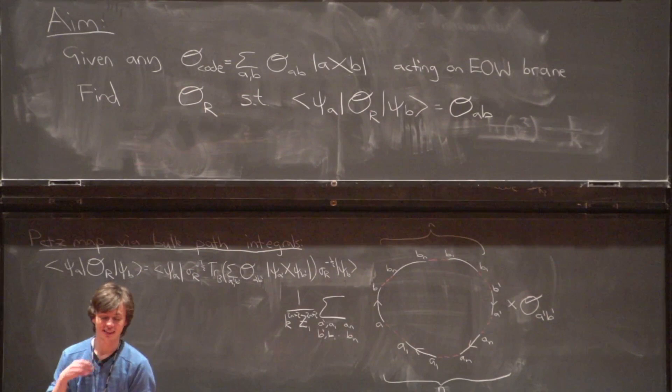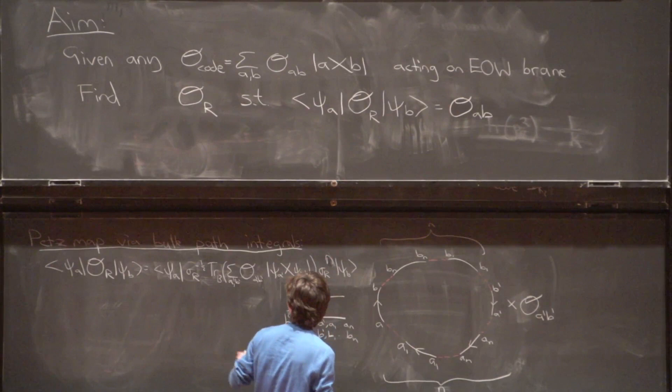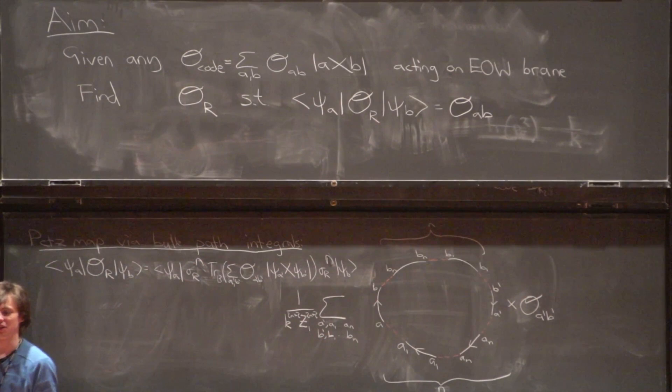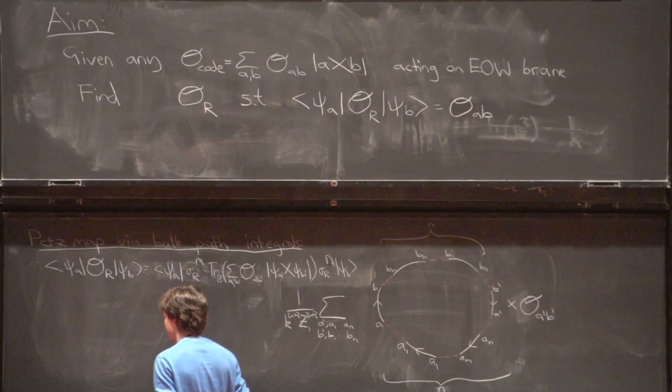Fortunately, great minds before us have basically already answered the question of what to do when you have density matrices to non-integer powers: you just pretend they are integer — in this case also non-negative integer n — evaluate everything, and at the end plug in n = −1/2, ignoring the fact that you can't have minus-a-half extra replicas.